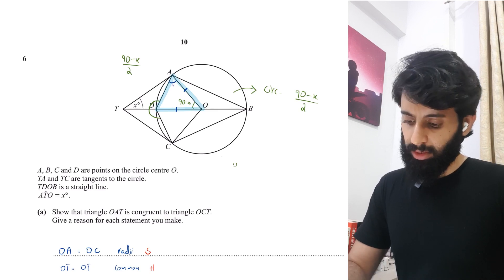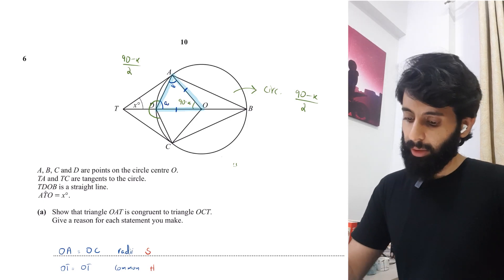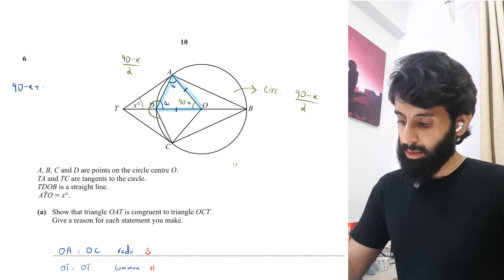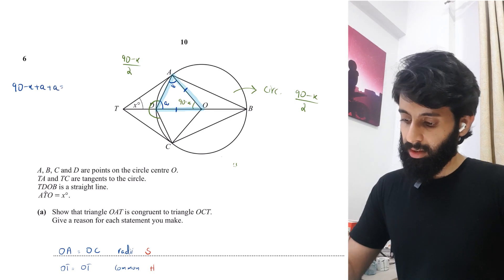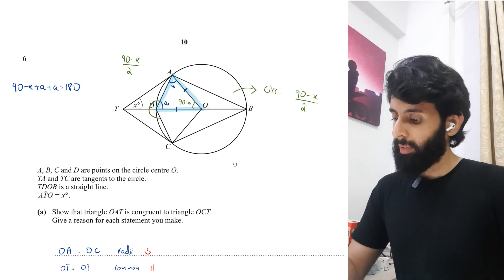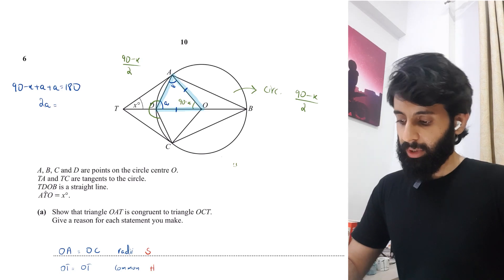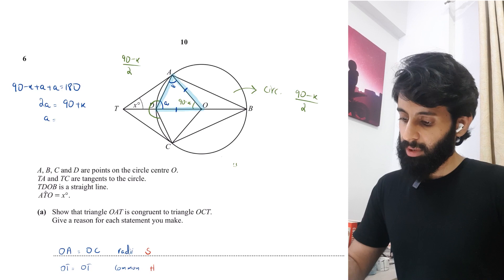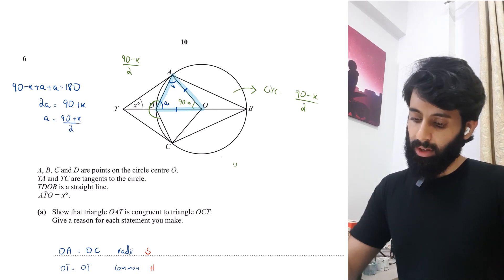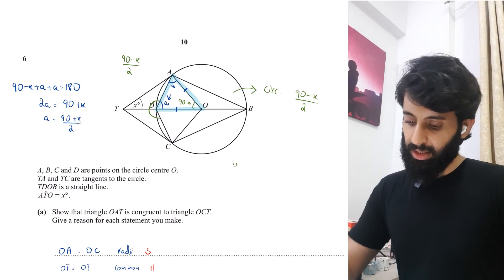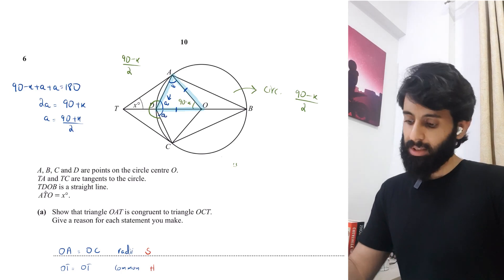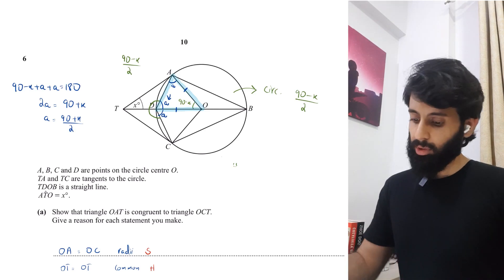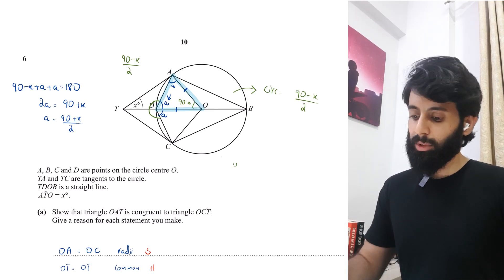This too will be an isosceles triangle for the same reason because OA and OD are radii of the same circle. Let's call this angle A for the time being. So that means this angle will also be A. So 90 minus X plus A plus A equals 180. So 2A equals 90 plus X and A is going to be equal to 90 plus X upon 2. This part is also going to be 90 plus X upon 2 because they're both congruent.